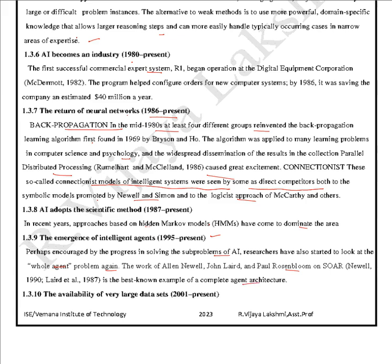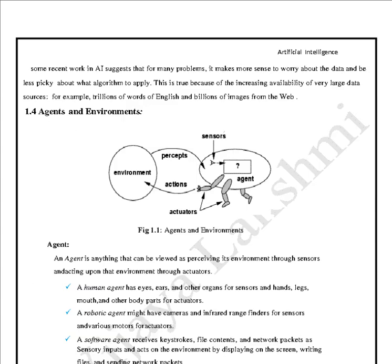The availability of very large databases from 2001 to present: for many problems it makes more sense to focus on the data and less on which algorithm to apply. This is true because of the increasing availability of very large data sources — for example, trillions of words of English text and billions of images from the web.